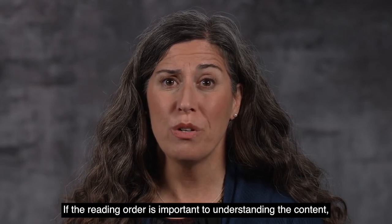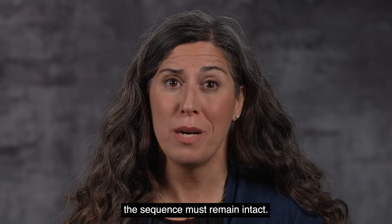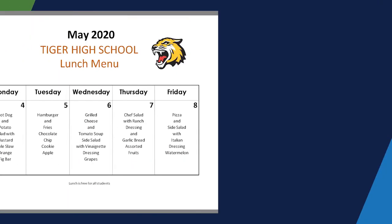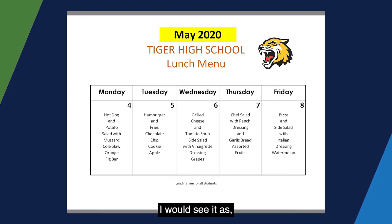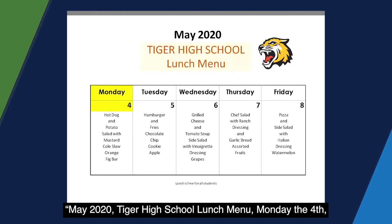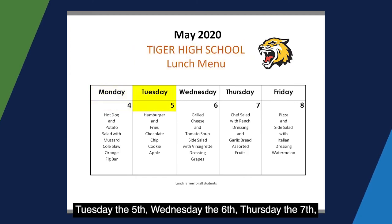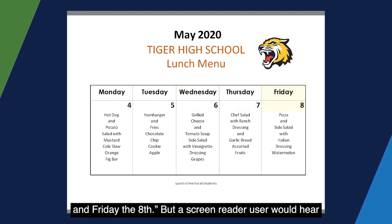If the reading order is important to understanding the content, the sequence must remain intact. So, if I start reading at the top of this lunch menu, I would see it as May 2020, Tiger High School Lunch Menu, Monday the 4th, Tuesday the 5th, Wednesday the 6th, Thursday the 7th, and Friday the 8th.